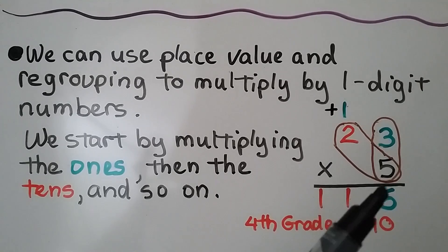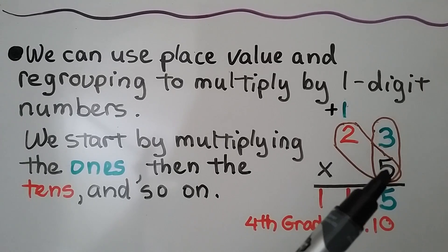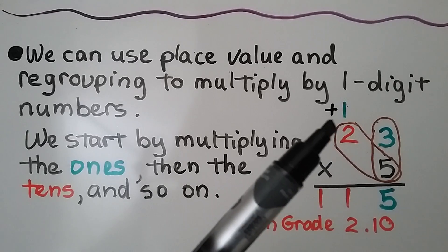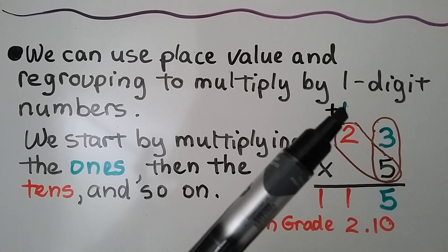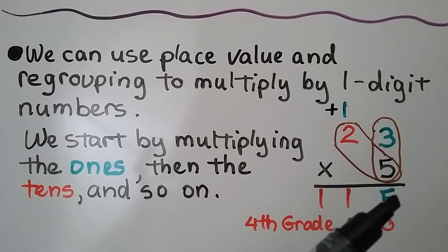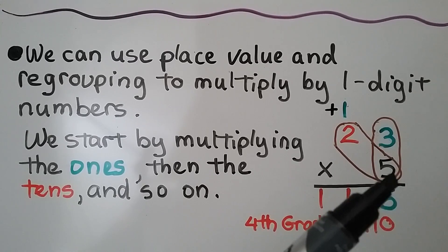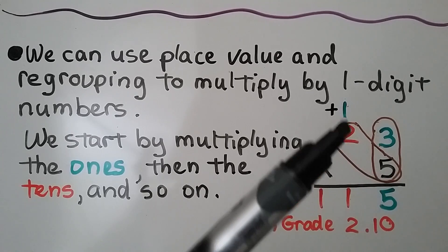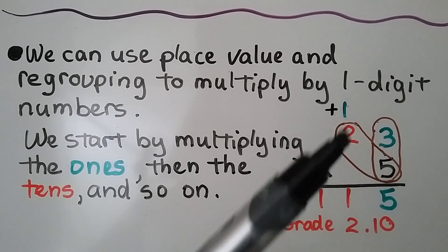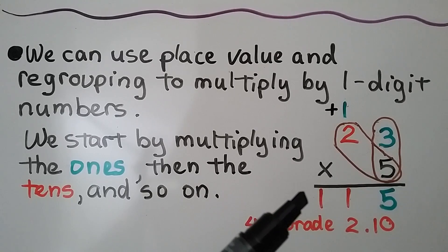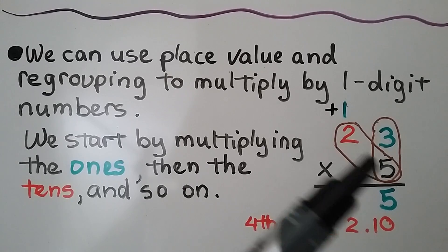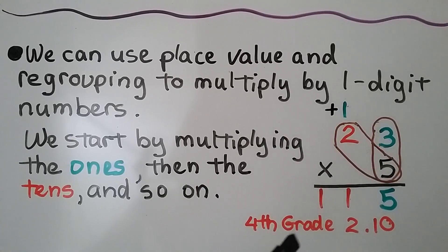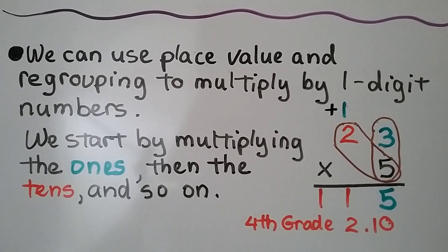We multiply five times three ones — that's fifteen ones — so we can regroup a ten to the tens place and write the five down here. Now we have five times two tens. Five times two is ten, plus one more is eleven. That's eleven tens. See how we multiplied these and then added the regrouped amount? That's 115.